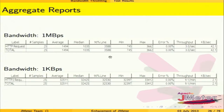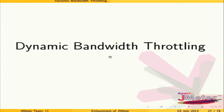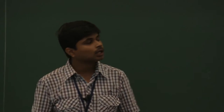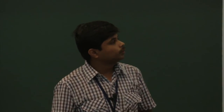The aggregate report shows a clear difference in throughput. The first thread group with 1 Mbps had a throughput of 3.0 requests per second (42.1 Kbps), while the second with 1 Kbps had a throughput of 9.1 per minute (0.15 requests per second, 2.1 Kbps). This confirms that different thread groups can now be assigned different bandwidths, simulating variable bandwidth in JMeter.